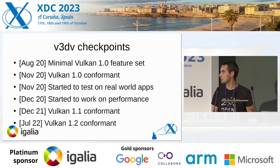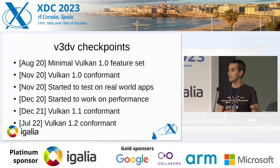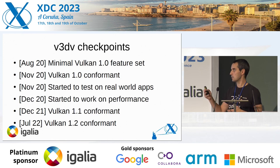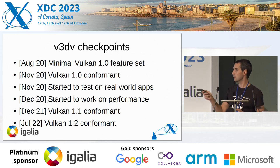Four years ago we started the Vulkan driver for the Raspberry Pi 4. Our first objective was getting Vulkan 1.0 conformant, and after that we did a lot of work for performance. We made that more later, usually after each conformance milestone — the 1.1 conformant and the 1.2 conformant — and that was when we did a lot of work on performance.